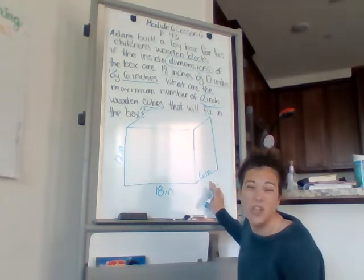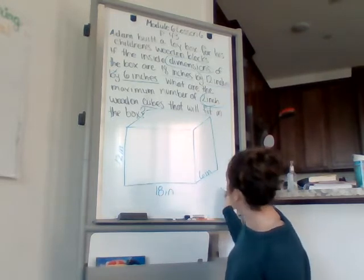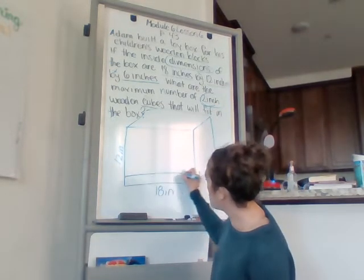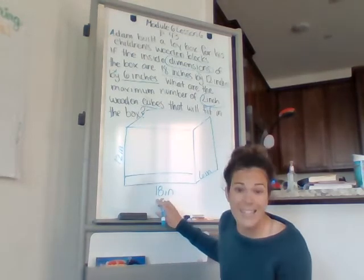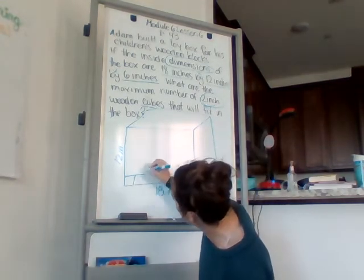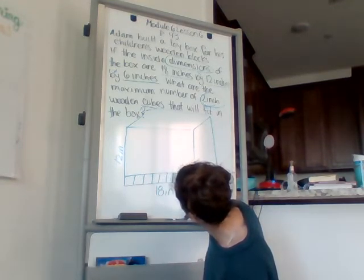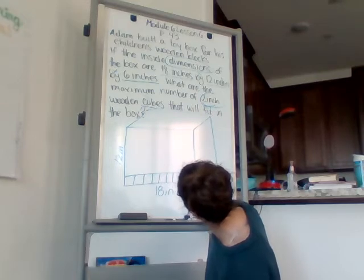Now, remember, what we're trying to figure out is how many 2-inch blocks can fill up this box. So if I'm thinking about each row, and I have 18 inches, and each block is 2 inches, that's 2, 4, 6, 8, 10, 12, 14, 16, 18.